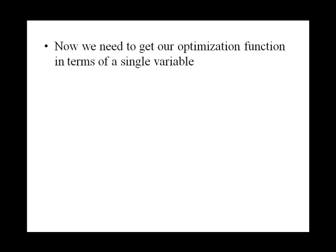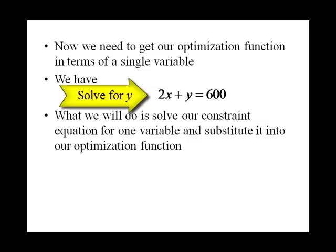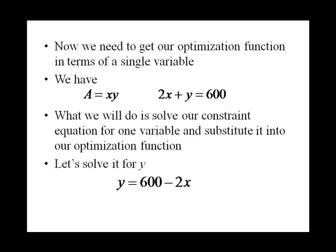Now, we want to get our optimization function in terms of a single variable. So what we do is we solve our constraint equation for one of the variables. We can choose either x or y. In this case, it looks like it'll be a little bit easier to solve for y. So we'll solve our constraint equation for y and then substitute that into our objective function. So solving our constraint for y, we get y equals 600 minus 2x.